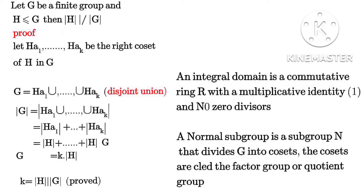Since G is the group, we take the union of all the right cosets H·a₁ up to H·aₖ. Then we take the order of both sides. Since the cosets are disjoint, we add them and separate the order. We then have k times |H|, which gives us the formula for Lagrange's theorem. The proof is complete.